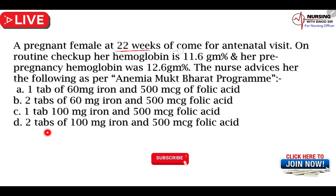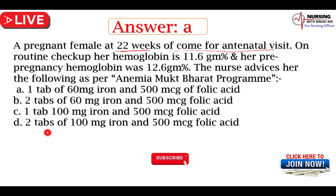A pregnant female, 22 weeks, came for antenatal visit। On routine check-up her hemoglobin is 11.6 gram। Her pre-pregnancy hemoglobin was 12.6 gram। The advice given — one tablet of 60 mg iron and 500 microgram folic acid — under Anemia Mukt Bharat program। इसको जरूर याद रखिए।